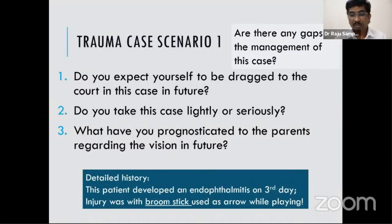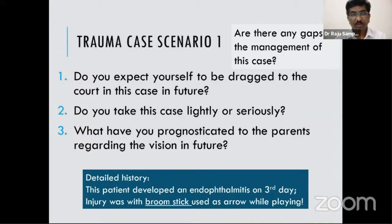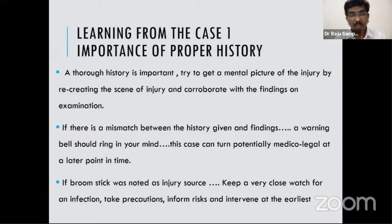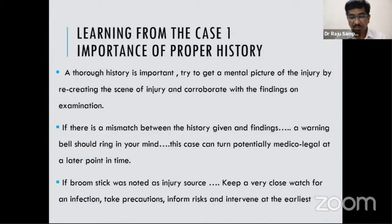This child unfortunately developed endophthalmitis on the third day. When a detailed history was taken, it turned out they were playing bow and arrow with an arrow made from a broomstick. The whole situation changed just because the injury was with a broomstick. What you learn from this case is that a thorough history is important. Always try to get a mental picture of the injury, recreate the scene, and corroborate it with examination findings. If there is a mismatch, a warning bell should ring that this is a potentially medical-legal case. Especially if a broomstick is involved, a very close watch is required, as this can end up with infection.